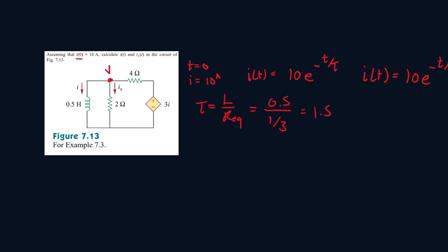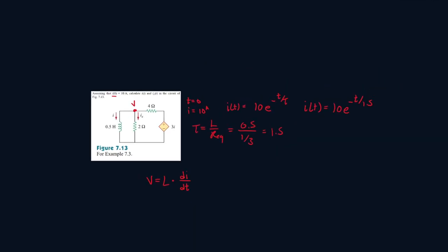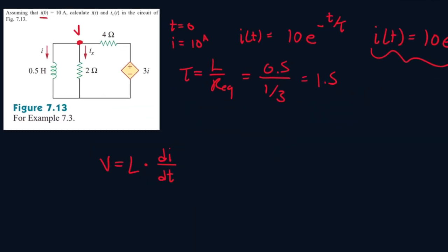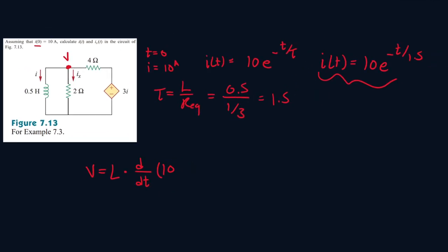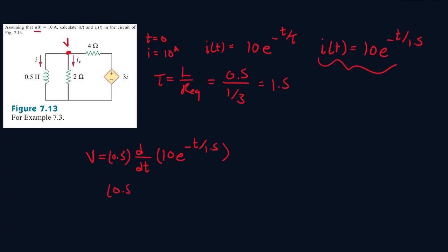What we can do is find the voltage at the inductor. Voltage at the inductor will be equal to the inductance value times the derivative of the current. We know the value of I passing through the inductor. It will be 10 E minus T over 1.5, and then the inductance value is 0.5.